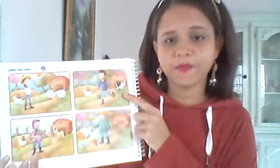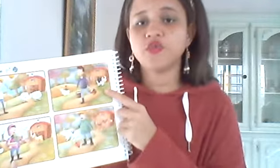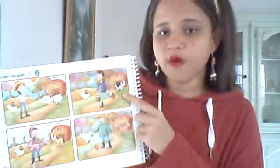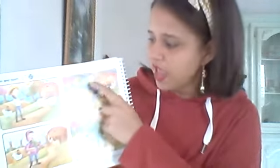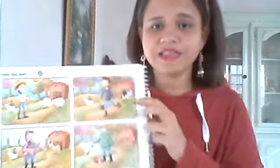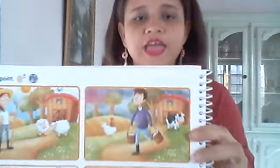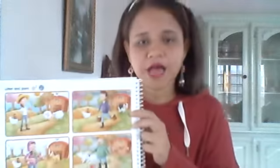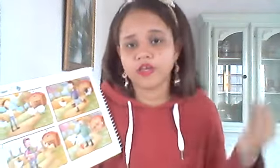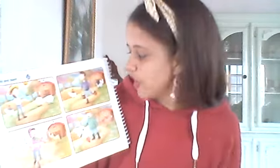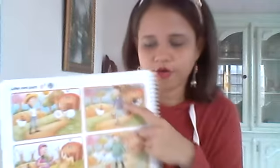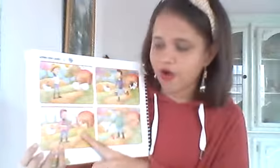On the second picture, you can see a farmer boy and if you look at the sky, it's cloudy. So, it might be a cold day because it's cloudy and it's going to rain. So, what is he wearing? He's wearing a sweater.